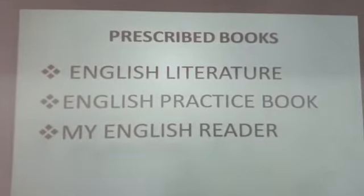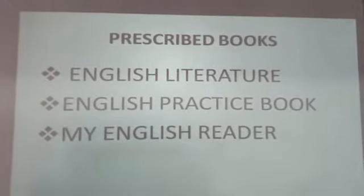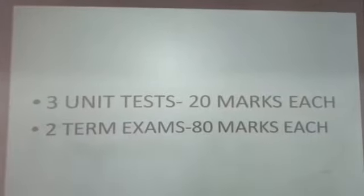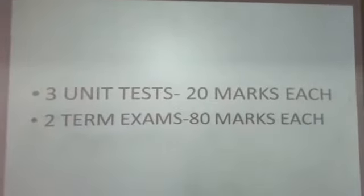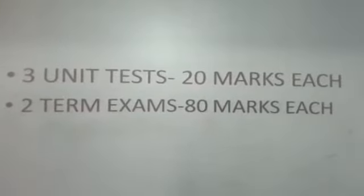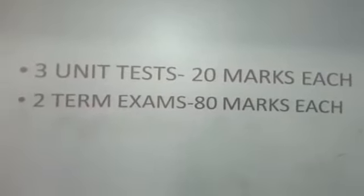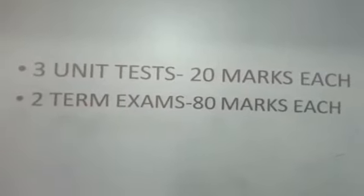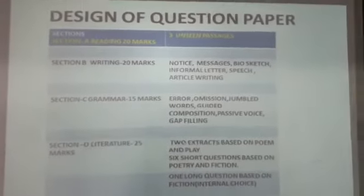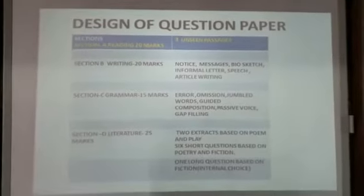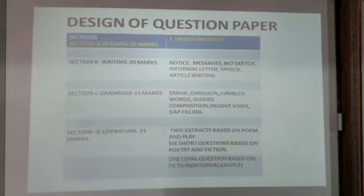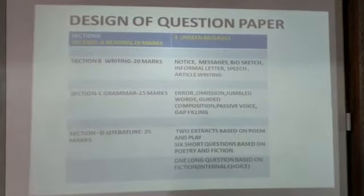There will be two terms for exam: half yearly and annual exam. The question paper of each term will be divided into four sections. Reading skill will be of 20 marks, writing skill will be of 20 marks, grammar is of 15 marks, and literature part is of 25 marks.